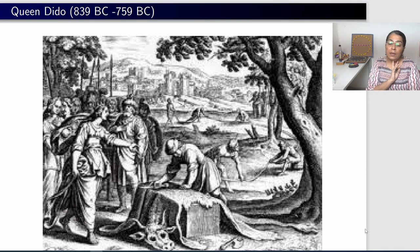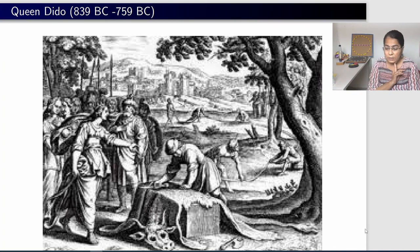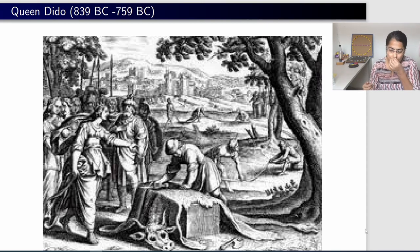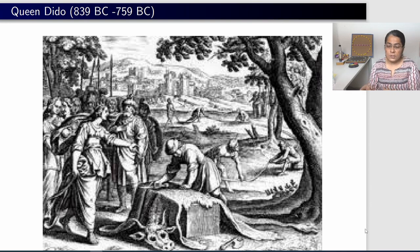There was the kingdom of Tyre — modern-day Lebanon — where there was a king who had two children. The elder was Alyssa, also known as Dido, and the younger was Pygmalion. When the king died, he had made both children joint heirs. But the people of the kingdom treated only the son as their king, even though he was still a very young child. Later, Dido married her uncle, who was second in power to her brother Pygmalion.